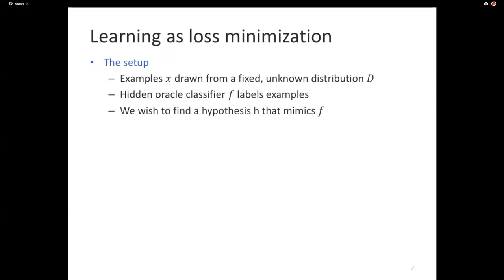What I'm going to talk about here can be seen as a generalization of the stuff we saw with support vector machines, with least mean square regression, and a whole bunch of other learning ideas. In some sense, this is a standard abstraction used when we want to build models today. This idea becomes important with neural networks and such things — this is the idea that's implemented.